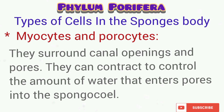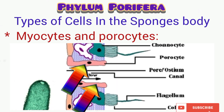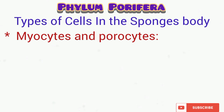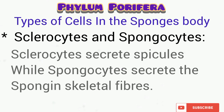Other types of cells in the body of the sponges include the myocyte and porocyte that actually surround canal openings and pores; they control the amount of water that enters the sponge's body through the pores. The sclerocyte secretes spicules, while the spongocyte secretes the spongy fibres.